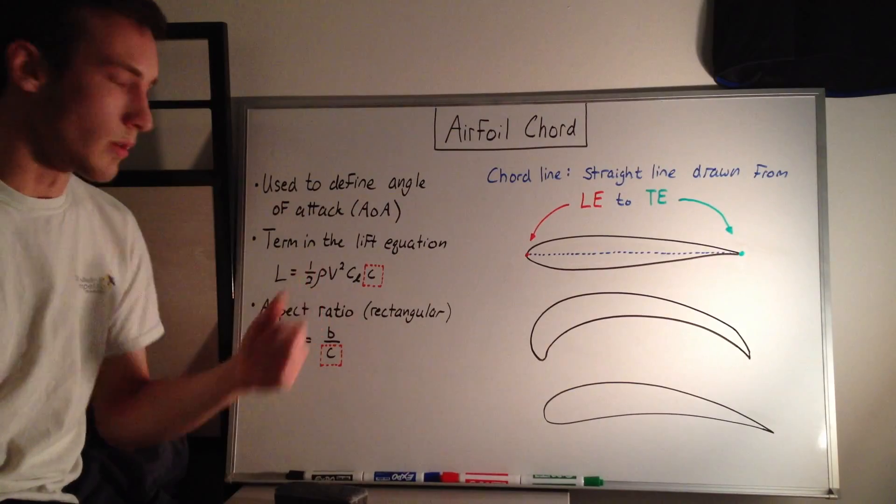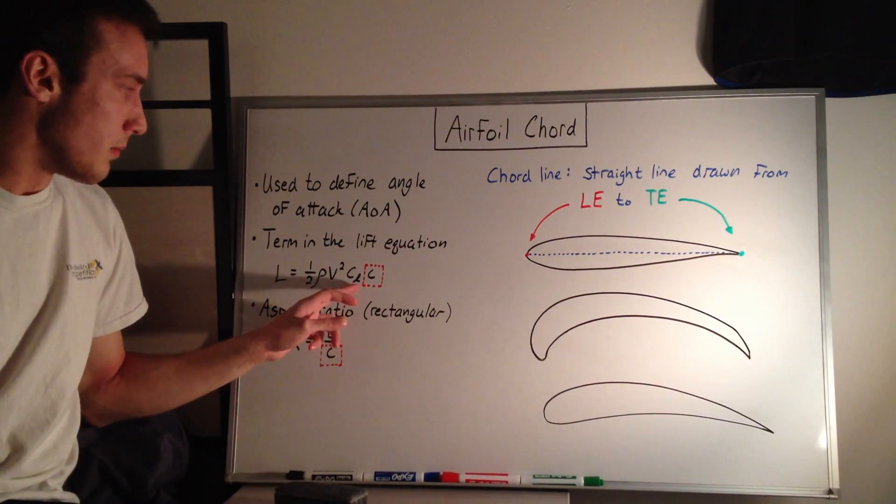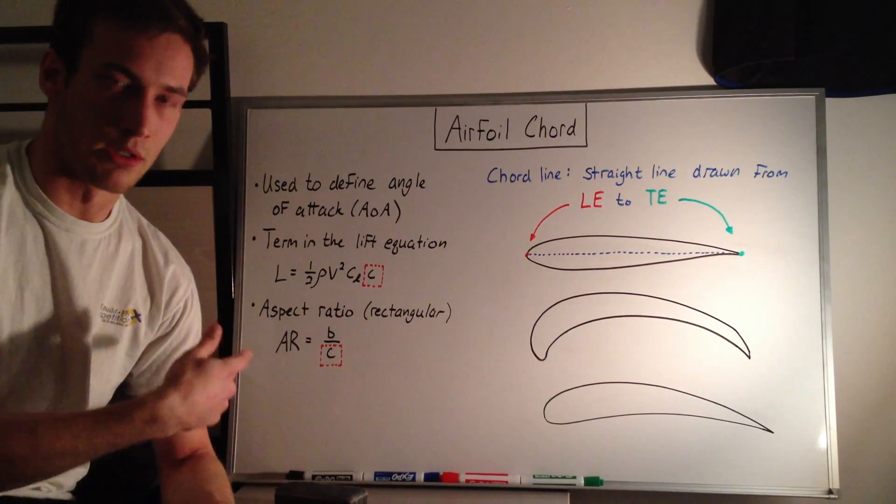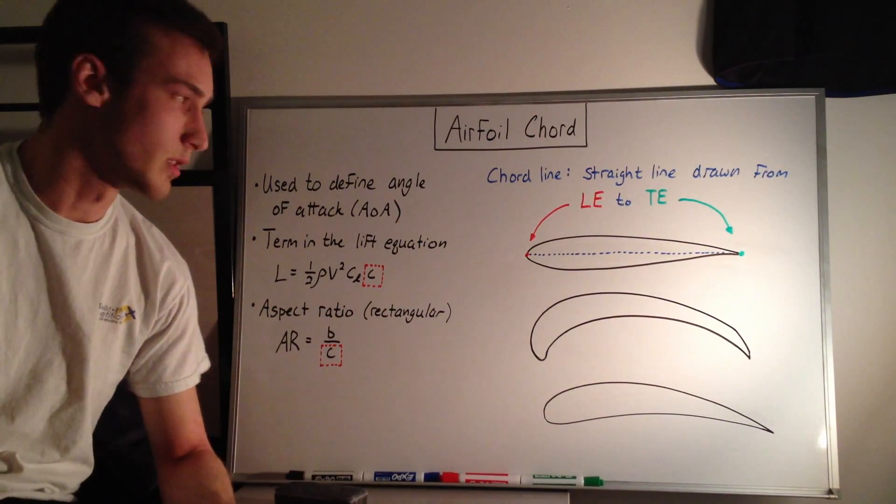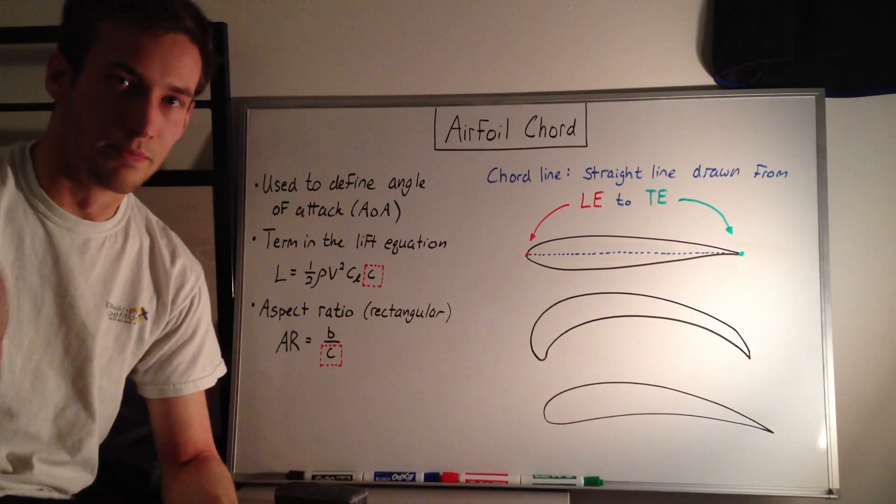Lift is equal to one-half rho v squared, which is the dynamic pressure, times the cord length. The lift coefficient has a small L because I'm talking about an airfoil. If it were for a 3D wing section, it would be a big L. You'll probably see that in documents or notes.